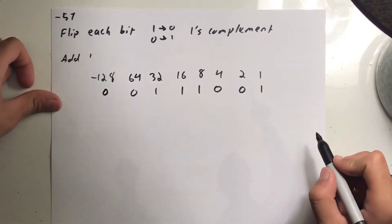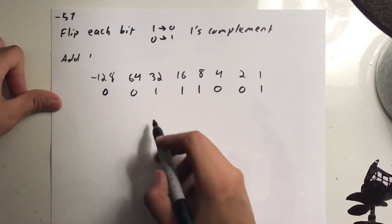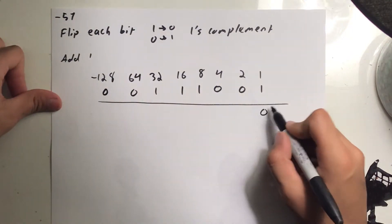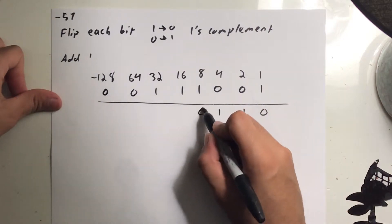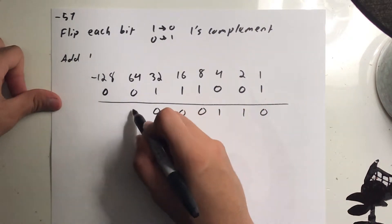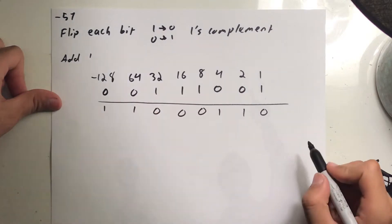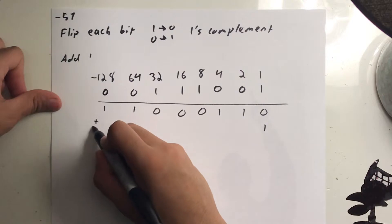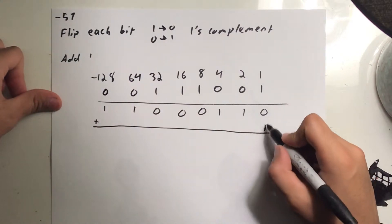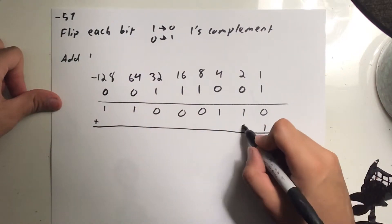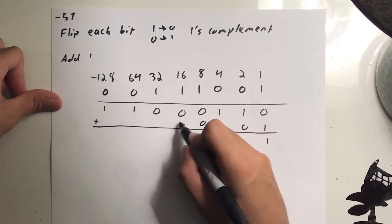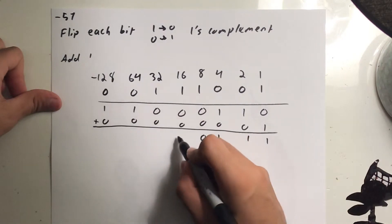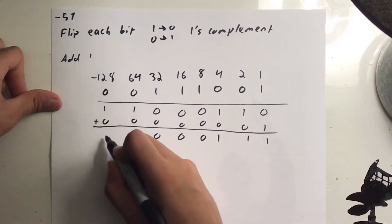Now flip each bit. So you make each 1 a 0 and each 0 a 1. After flipping, you add one in binary. The result is: 1, 1, 0, 0, 0, 1, 1 — and you're done.